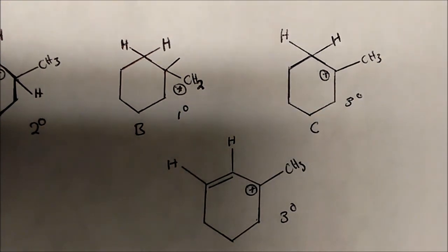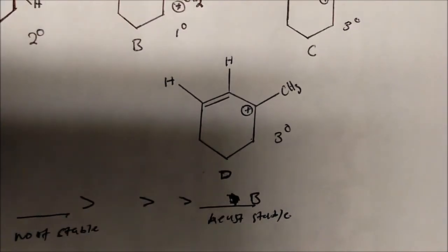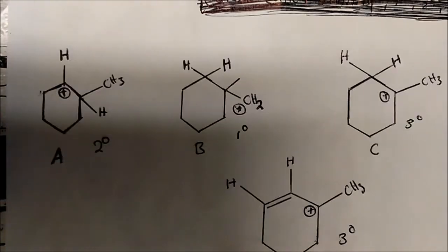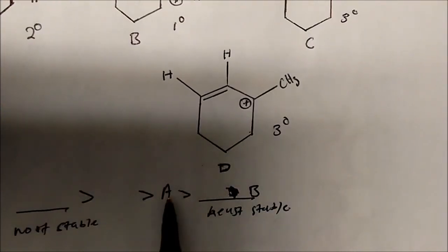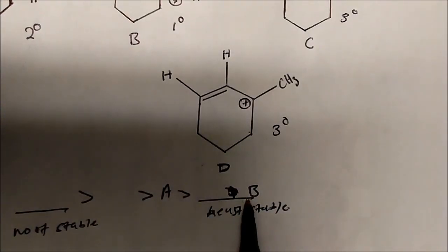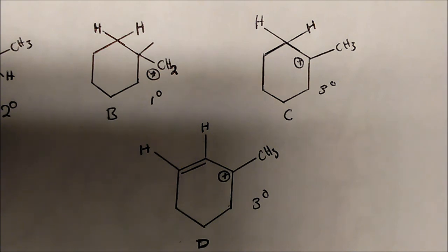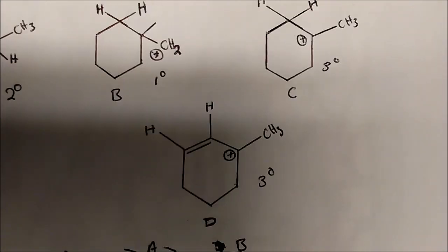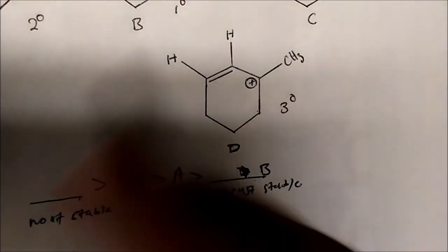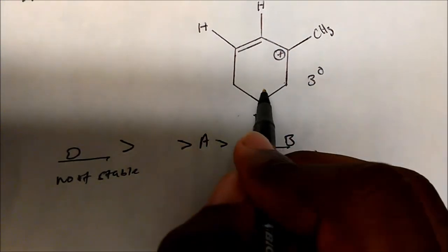A tertiary is the most stable. So which one falls just above B? That would be A, because A is a secondary carbocation, and a secondary carbocation is more stable than a primary. Which comes after that? We have two tertiary carbocations — C and D. So which one is the most stable? D is more stable than C, and C falls just below D.